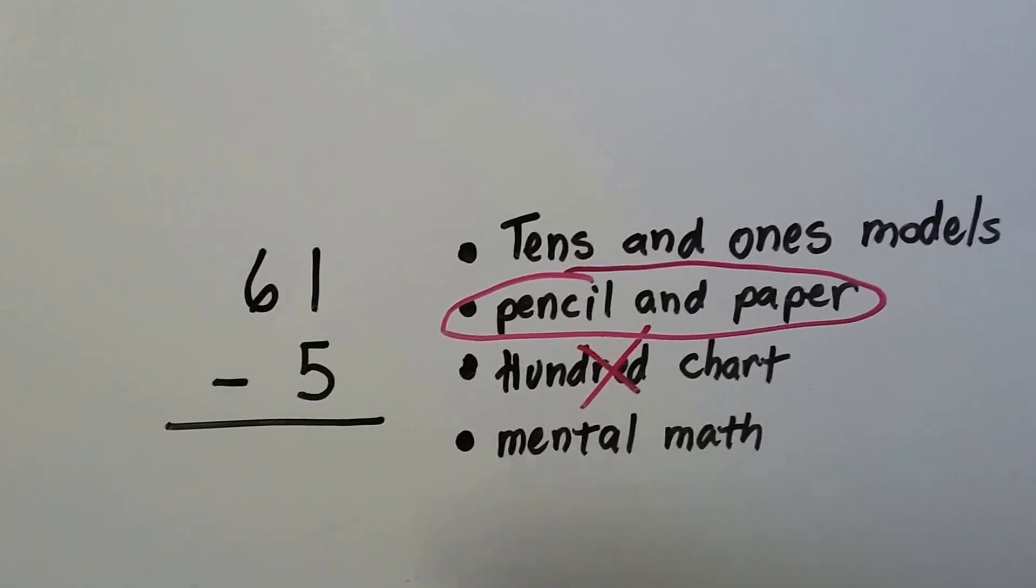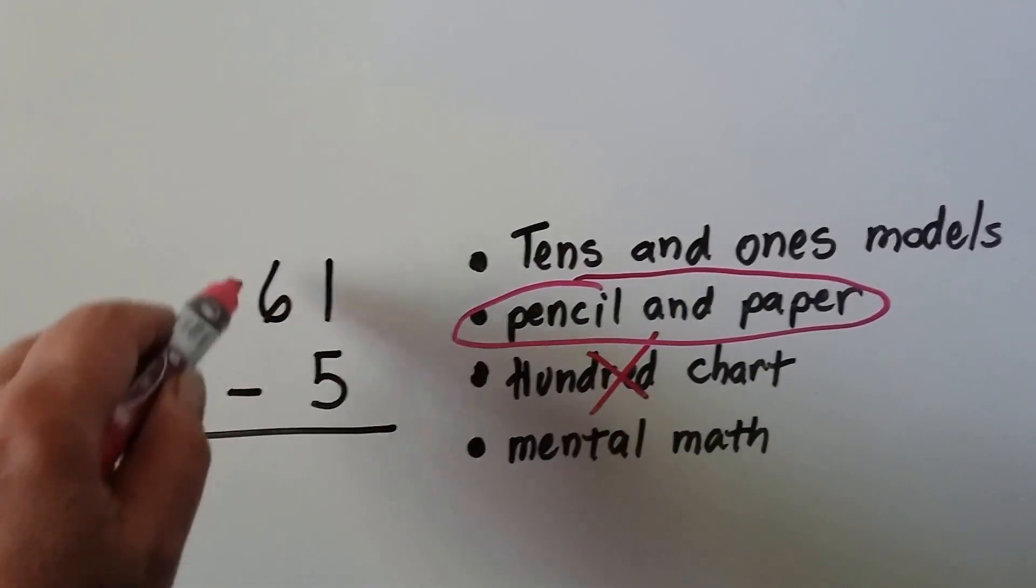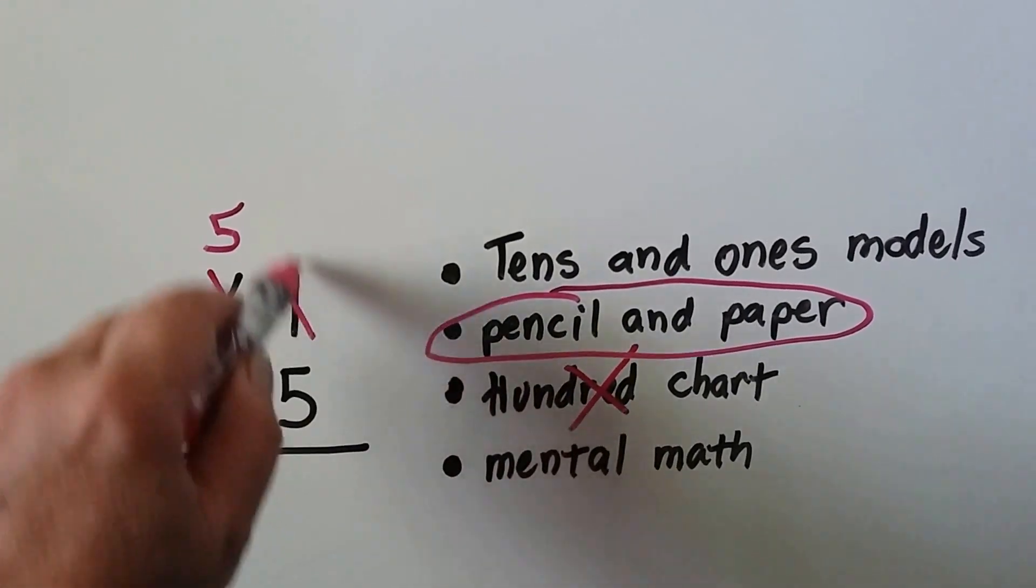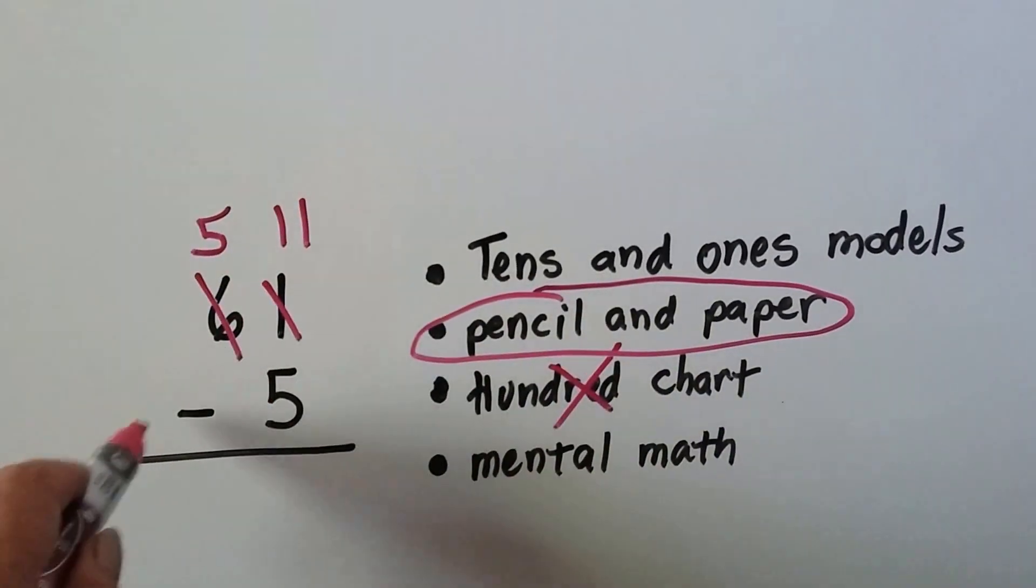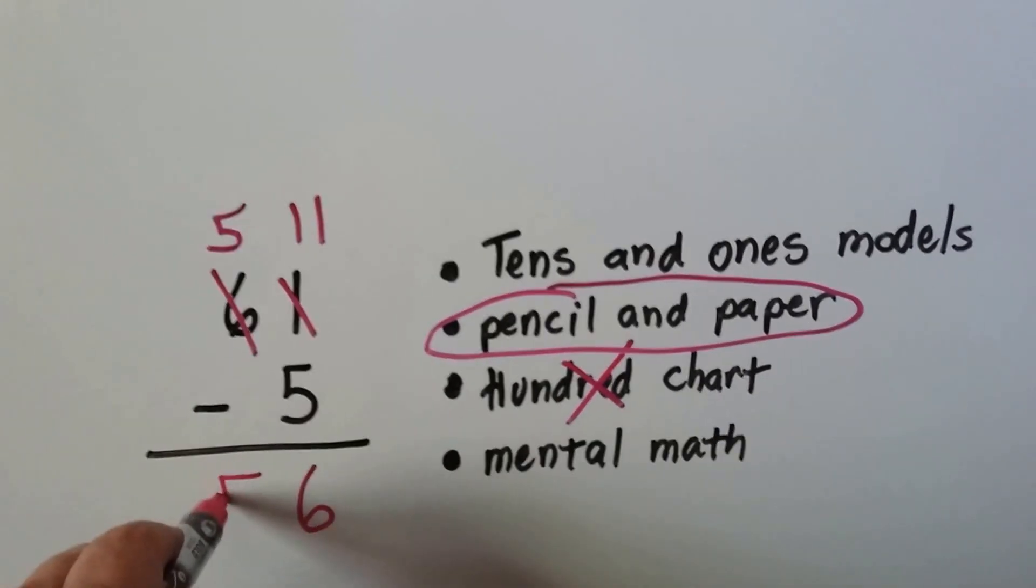We'll just do this with the pen. We have 61 minus 5. The five is bigger than the one. So we regroup the six is a five. The one becomes an 11. Now we have 11 minus five, which is six. We drop down the five. We have 56.